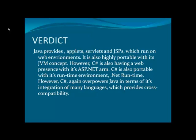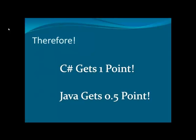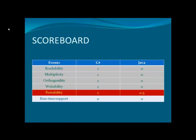Coming back to the verdict related to portability: Java provides applets, servlets, and JSPs which run on web environments, and is also portable with the JVM concept. However, C-Sharp also has a web presence with its ASP.NET arm and is portable with its .NET Runtime environment. C-Sharp again overpowers Java in terms of its integration of many languages, which provides cross-compatibility. Therefore, C-Sharp gets one point and Java scores half of it.